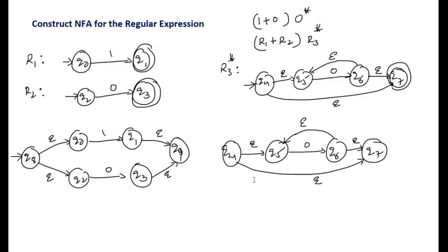Now r1+r2 must be concatenated with r3 star, so q9 on epsilon moves to q4. q7 is the final state and q8 is the starting state. This represents (r1 union r2) concatenated with r3 star. This is how we construct the epsilon-NFA for the given regular expression. This epsilon-NFA can then be converted into NFA, and NFA can be converted into DFA. Please subscribe and thanks for watching.